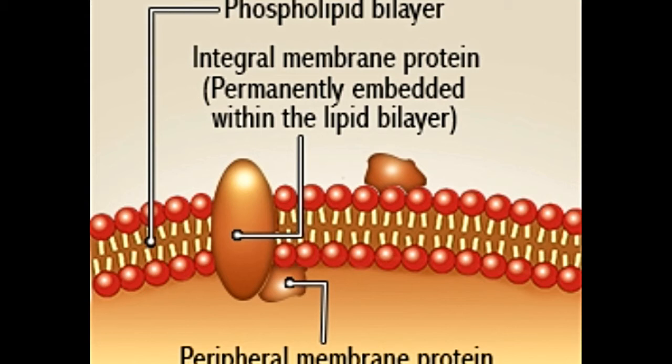The characteristic feature of phospholipids and glycolipids is that they are composed of a hydrophilic (water-loving) and a hydrophobic (water-fearing) region. In an aqueous solution, phospholipids tend to arrange themselves with the hydrophilic phosphate heads facing outwards and the two hydrophobic fatty acid tails facing each other in the middle, thereby forming a bilayer.